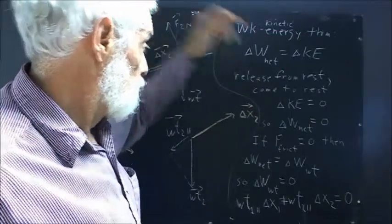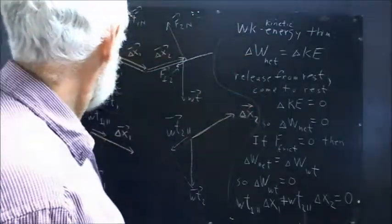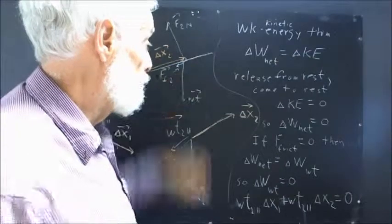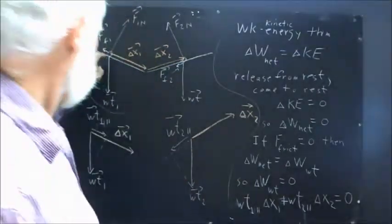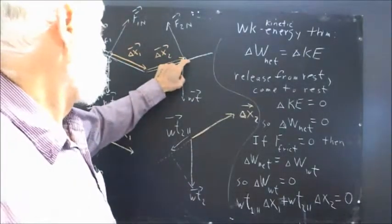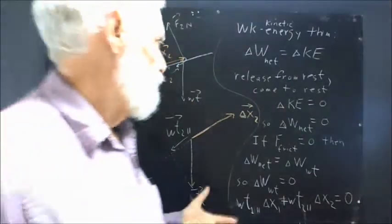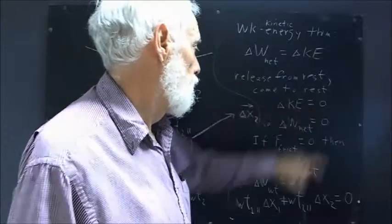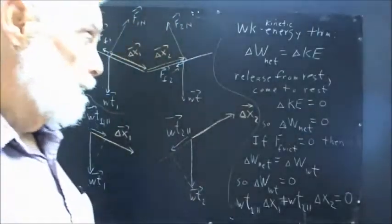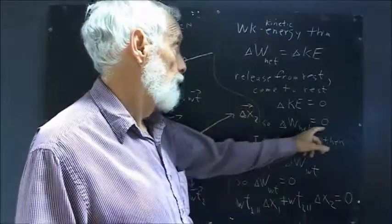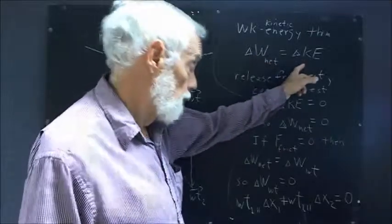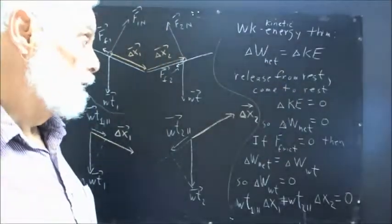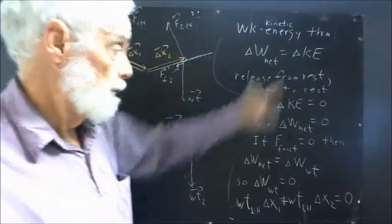When the ball is released from rest and comes to rest, so it's released from rest here, comes to rest here, the kinetic energy at rest is zero, so the kinetic energy here and here is zero in both places. So the change in kinetic energy is zero, and it follows that the work done by the net force is zero. The work done by the net force being equal to the change in kinetic energy for reasons that you should understand very well.